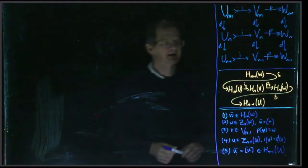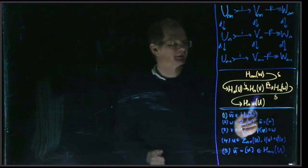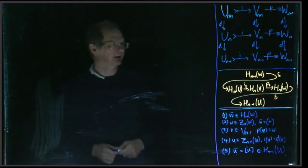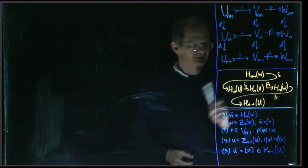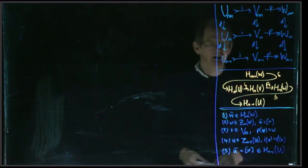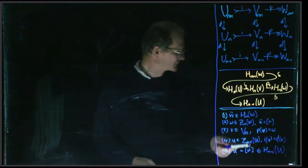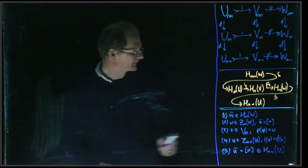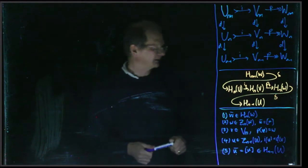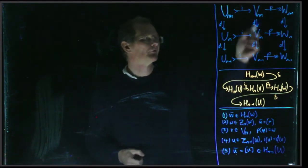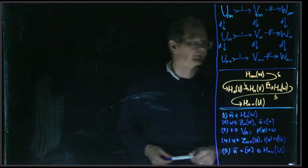Our goal was to prove the snake lemma, which says that this sequence in orange here is exact. So we have this delta followed by i_* and p_* and delta. In the last video, we validated the definition of delta, so we've got a well-defined homomorphism delta, and we need to show that this sequence here is exact. Delta was defined in terms of snakes: to find delta of h_{n+1}(W) we had to choose a snake — w-bar, w, v, u, u-bar — satisfying the conditions written down here, and then delta of w-bar is going to be equal to u-bar. We'll start in the middle of this sequence, at h_n(V), and we want to claim that the image of i_* is the same as the kernel of p_*.